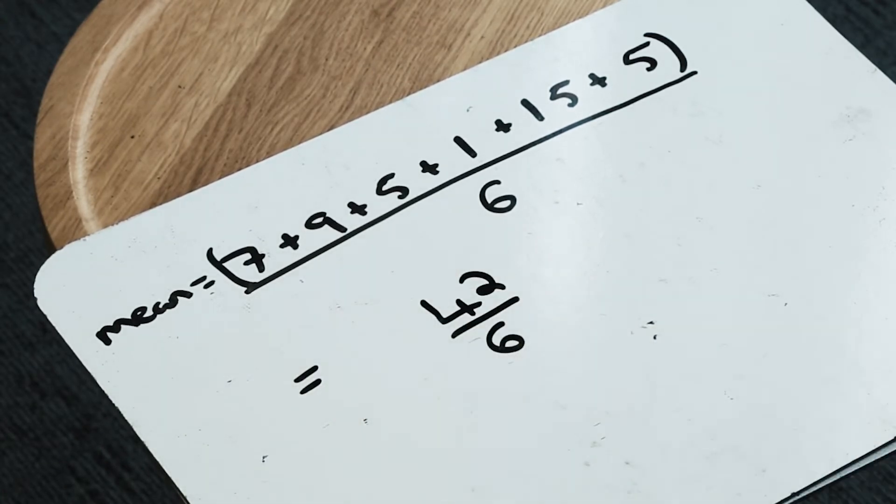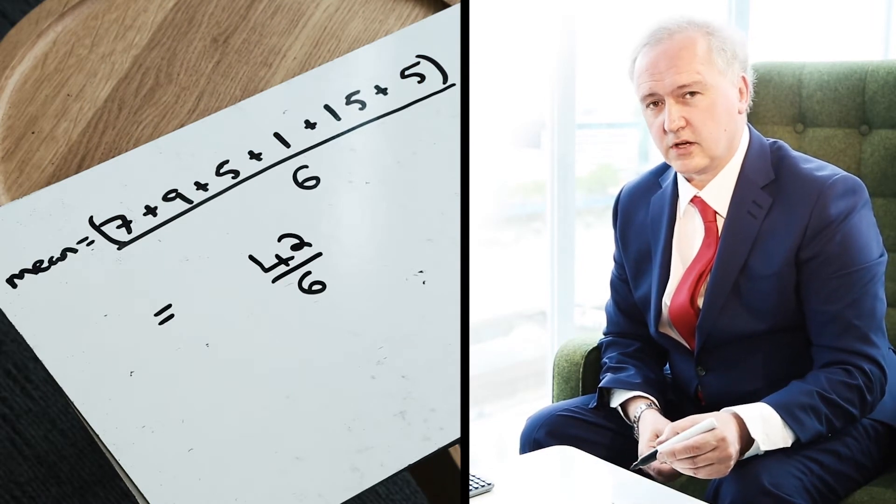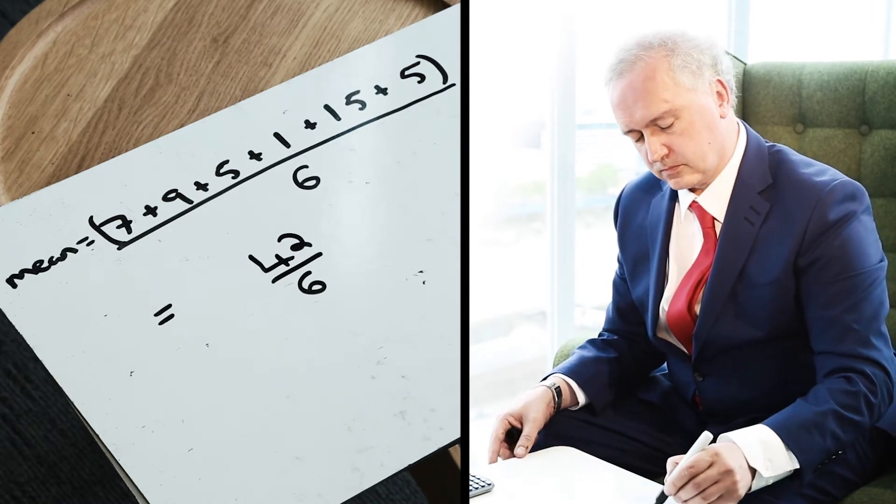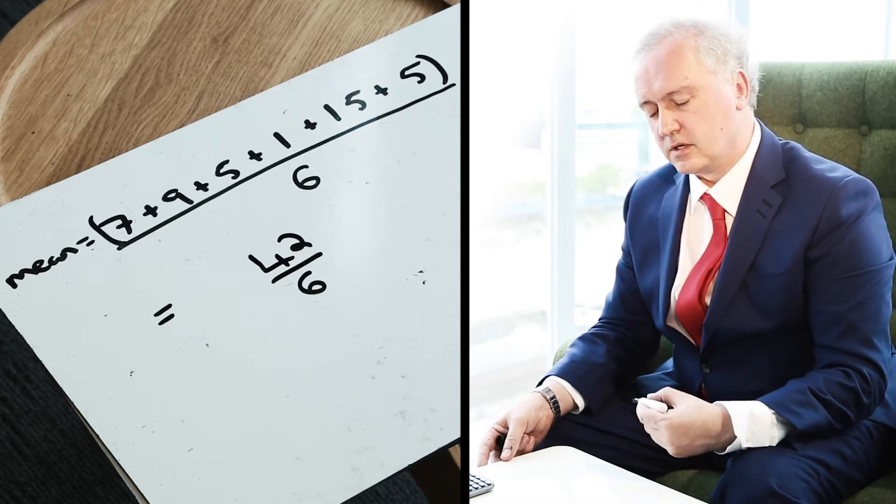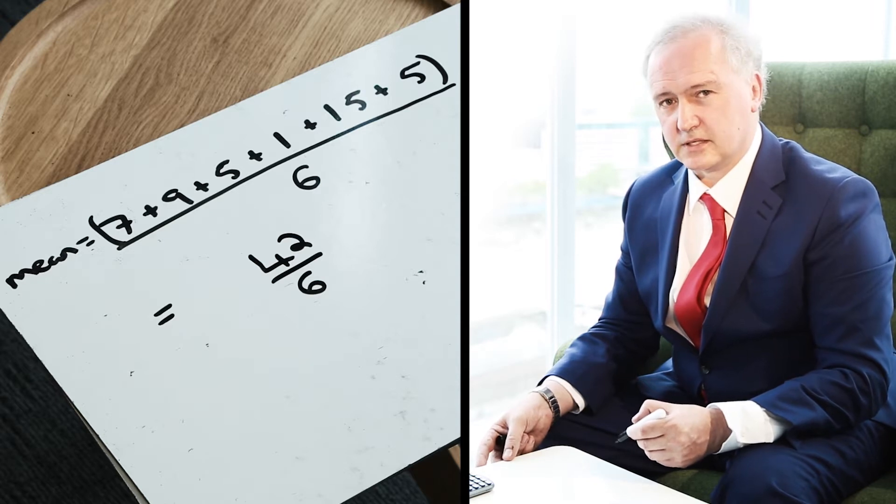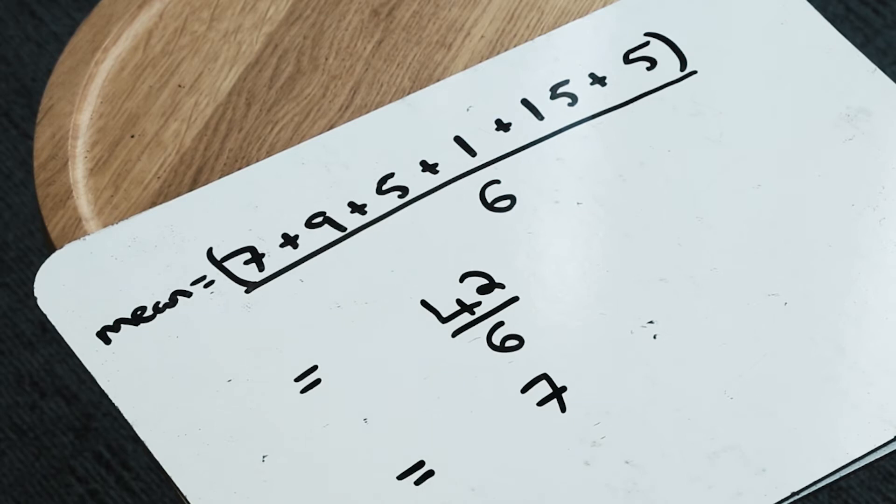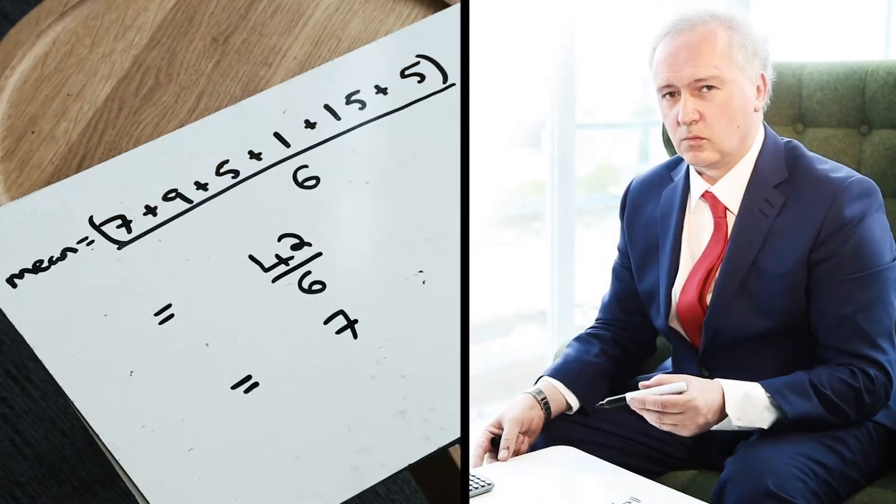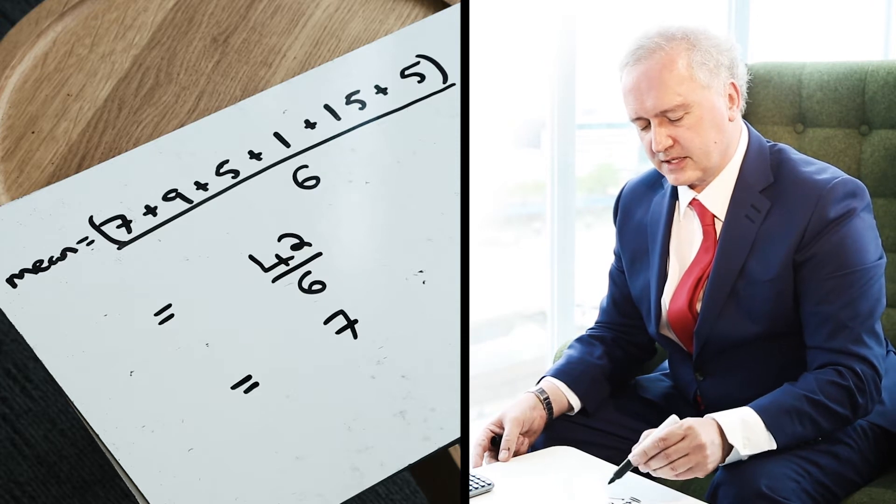Now it's really important that we show clear, concise method work and say that the mean is 42 divided by 6. This may appear on the calculator paper or non-calculator paper, but we can see quite clearly that 42 divided by 6 gives us an answer of 7. So my mean calculation produces a correct answer of 7.